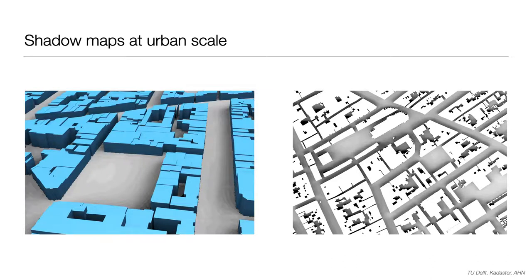Estimating shadows is another example. We can use 3D city models to estimate the level of sunlight at the street level — an analysis that is not possible without 3D data. Among different applications, this analysis helps to understand the thermal comfort of pedestrians. Since the State of the Map community has a pretty open science stance, it's relevant to mention that this analysis has been done entirely using open data and open source software.